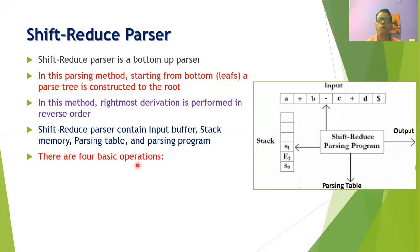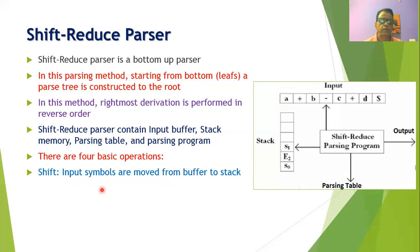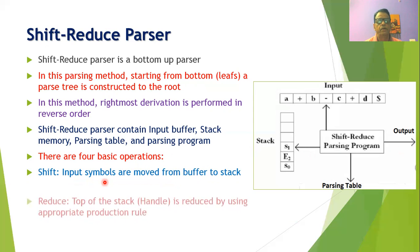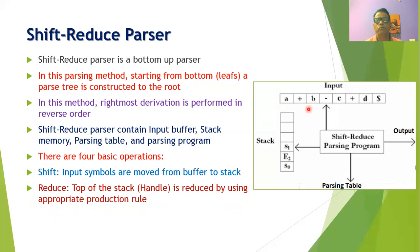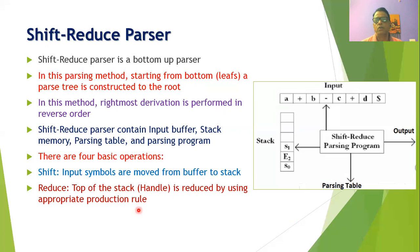There are four operations performed in the shift reduce parser. The first is the SHIFT operation, where input symbols are moved from the input buffer to the stack. In the REDUCE operation, the top of the stack — normally a handle — is reduced using the appropriate production rule, removing symbols from the stack.